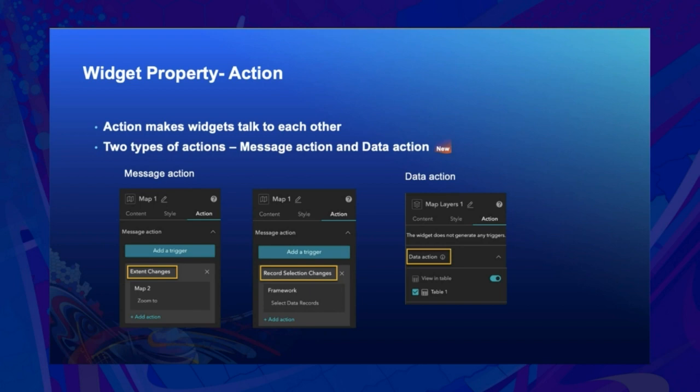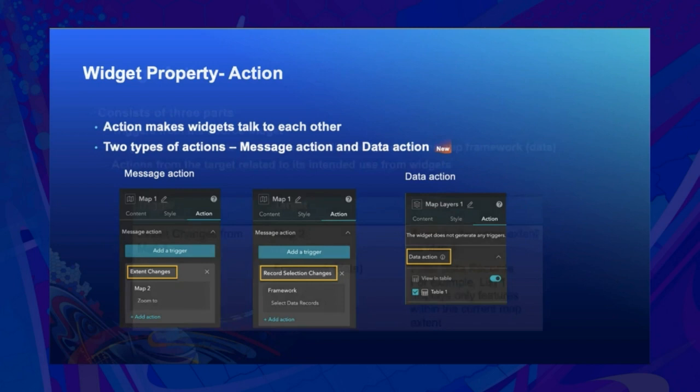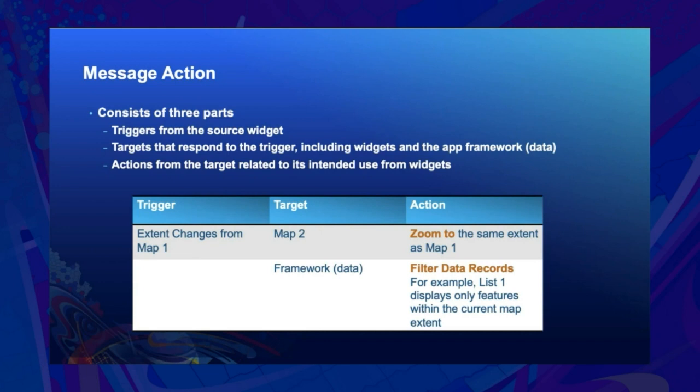The data action is taken directly by the widget to deal with a set of features, like export to CSV or view the layer in the table. We're going to focus on the message action. A message action involves three parts: triggers, targets, and action.